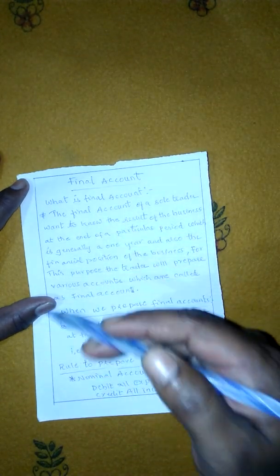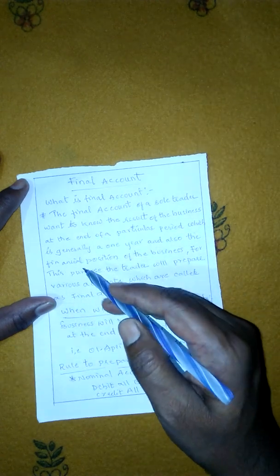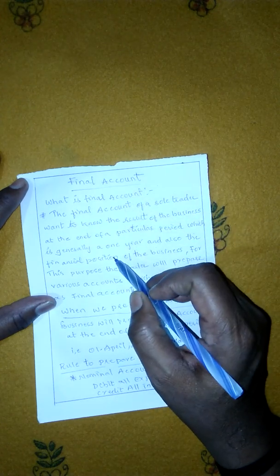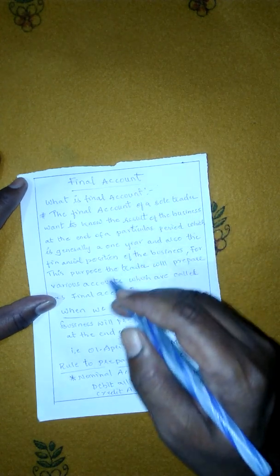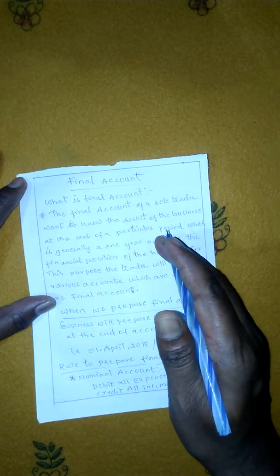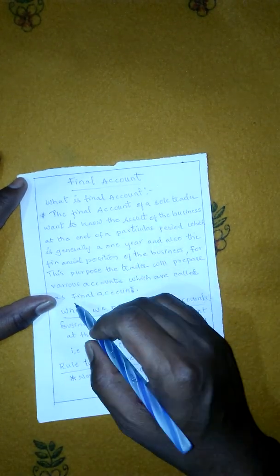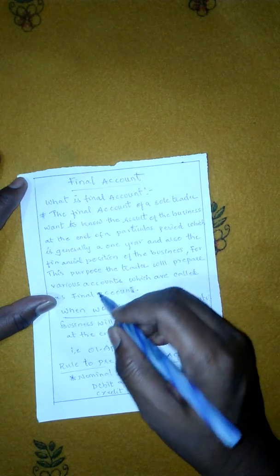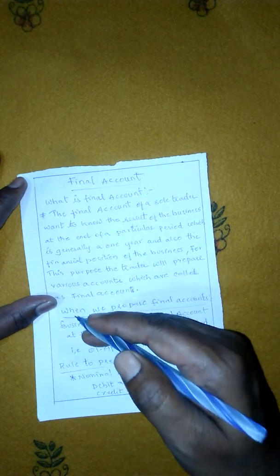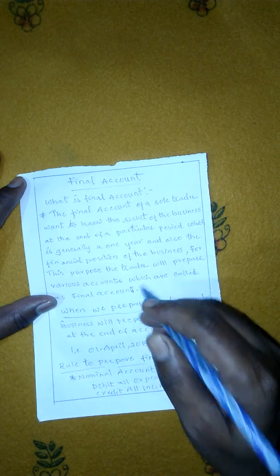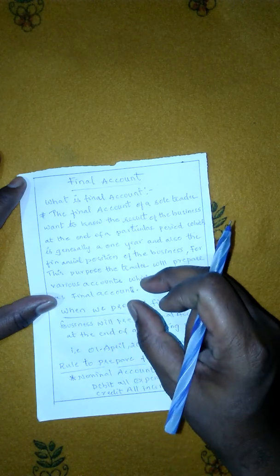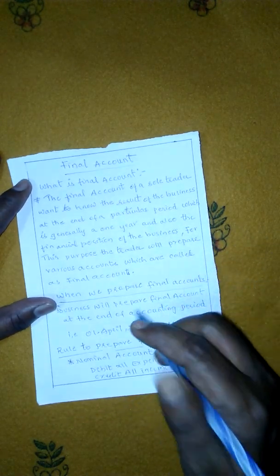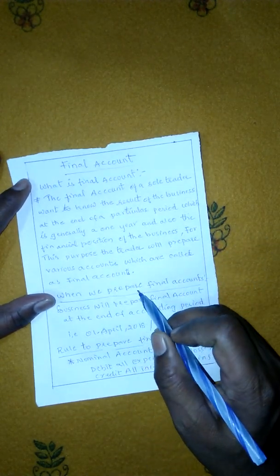For the preparation of final accounts, the trader has to prepare various accounts. First, the trading account, which gives gross profit and gross loss. Next, the profit and loss account, which reveals net profit and net loss. Finally, the balance sheet, which reveals complete information about the financial position of the business.